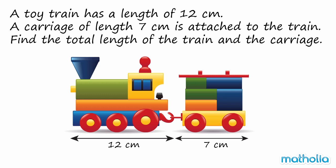A toy train has a length of 12 cm. A carriage of length 7 cm is attached to the train. Find the total length of the train and the carriage.